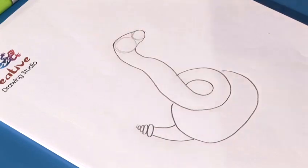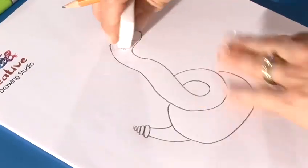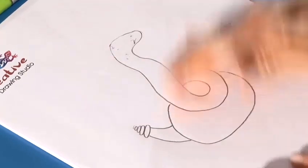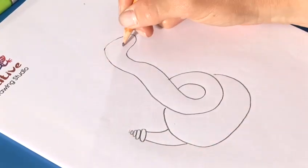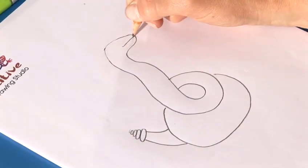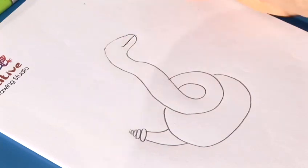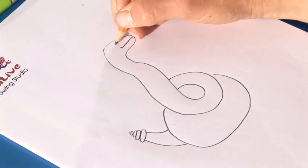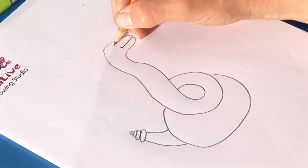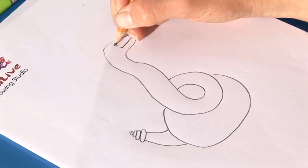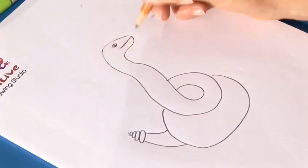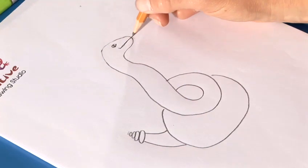And we can erase now these circles here, and put a straight line for the mouth, very serious straight mouth, a little eye, and how about a forked tongue.